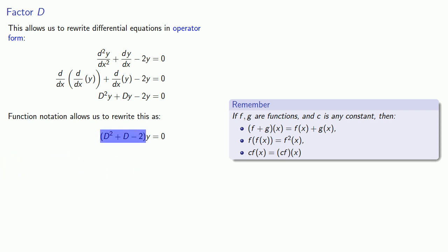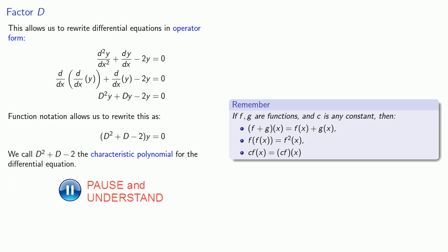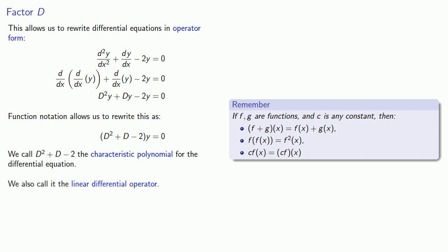This looks an awful lot like a polynomial, so we call D² + D - 2 the characteristic polynomial for the differential equation. Because it consists only of derivatives and constants, it is also a linear operator, and so we also call it the linear differential operator.